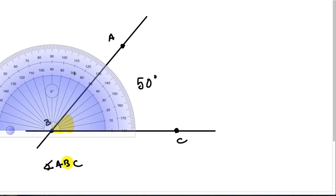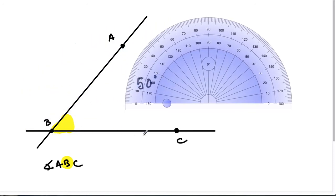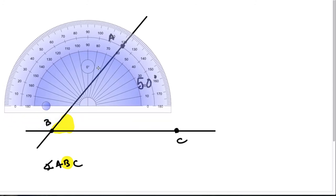Now what happens if I were to measure this instead of using line BC as my starting off line, what if I used line AB? Well let's see how this works. We would have to take our protractor and line up the horizontal line with the line AB.